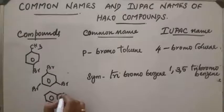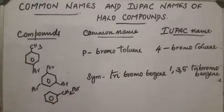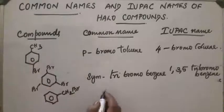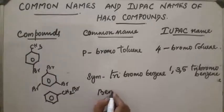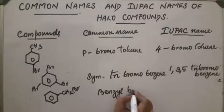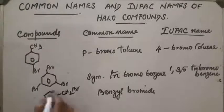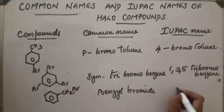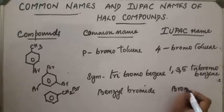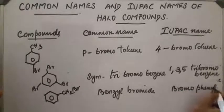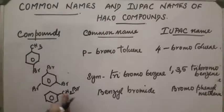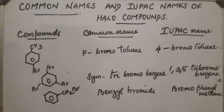Next compound: a benzene ring with a CH2Br chain attached. The common name is benzyl bromide, as this is a benzyl group. The IUPAC name is bromo-phenyl-methane, where the parent carbon is methane and both bromine and the phenyl group are attached to it.